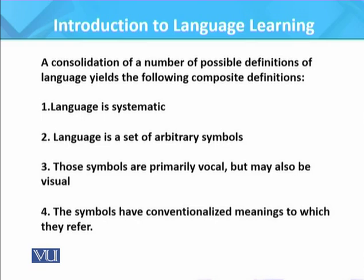Arbitrariness is the combination of linguistic units — that is, concepts, ideas, and objects — that are expressed. Third, those symbols are primarily vocal but may also be visual, meaning they primarily refer to sounds and speech, while visual refers to words or written text. The symbols have conventionalized meanings. Languages are the outcome of evolution and conventions, which are transmitted from generation to generation. Every language is a convention in a community and therefore is not hereditary but acquired.